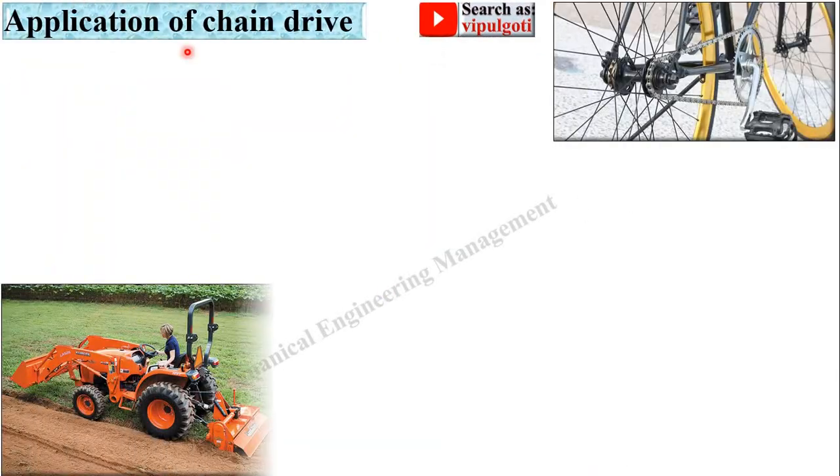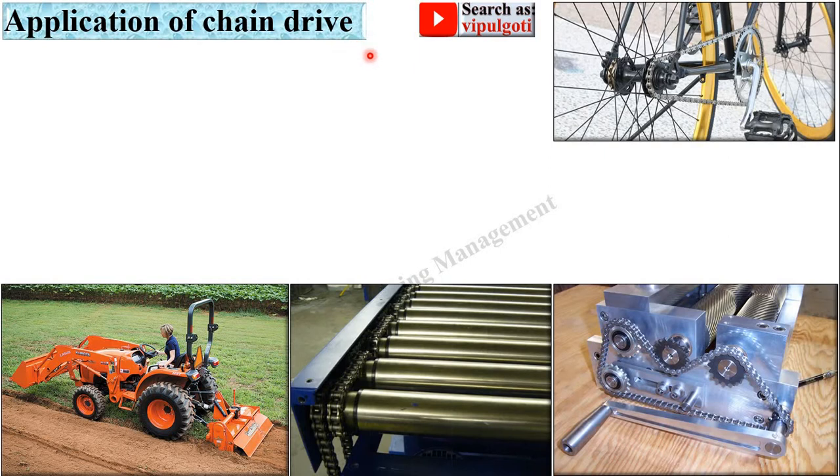Now application of chain drive. Here you can see it is used in bicycle, it is used in agriculture sector also. It is used in construction of conveyor and in many machineries.